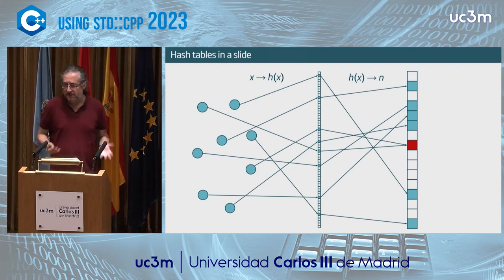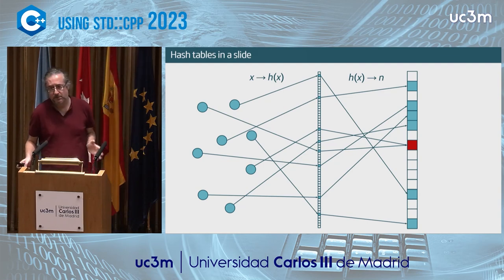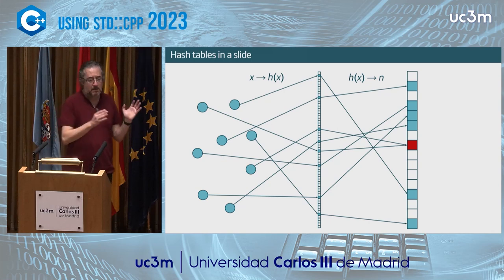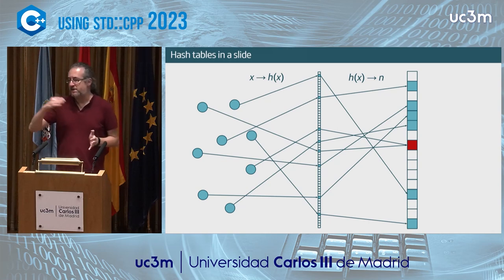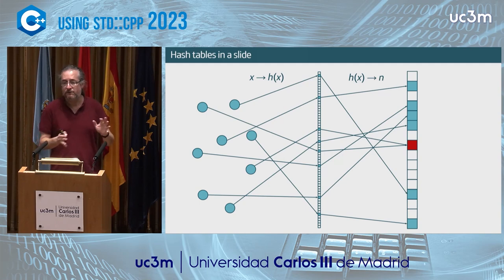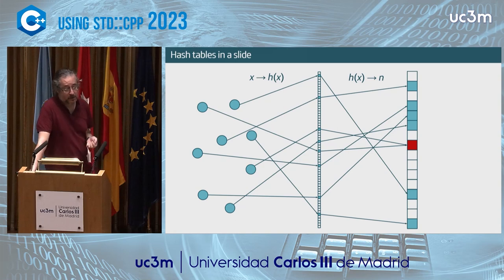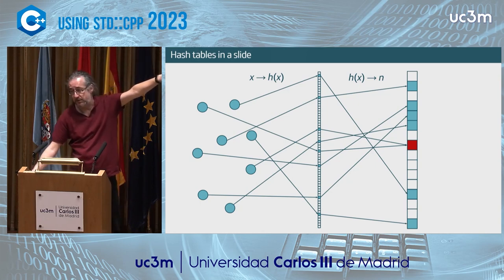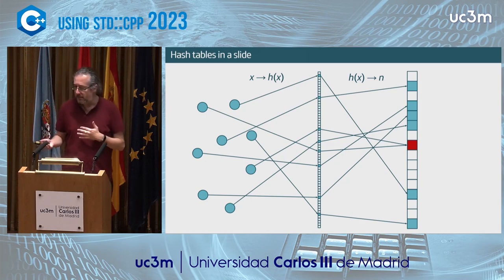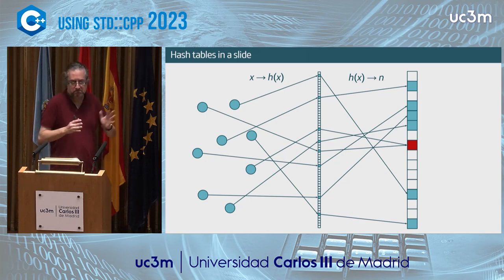A hash table's business is basically to insert a bunch of elements into a so-called bucket array. We do this by means of a hash function, which ideally maps each different element to a different hash value. Probabilistically speaking, if the hash function is good enough, hash values are going to be different. Hash values are typically large — like 64 bits — so in order to fit them into the bucket array, you have to do some kind of reduction, like via a modular function or keeping the lower bits of a hash.